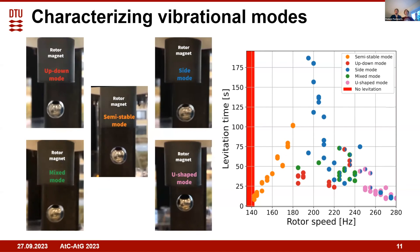At even higher frequencies we see this mixed mode between the up-down mode and side mode. Then at even higher frequencies the floater magnet has moved close enough to the rotor magnet that the magnetic field changes quite dramatically during its oscillations, leading to a U-shaped mode.